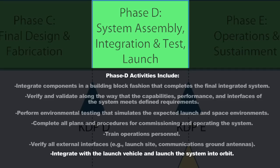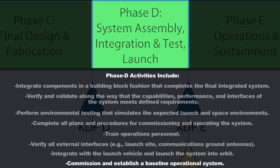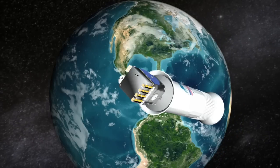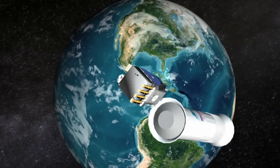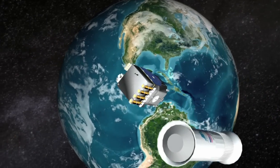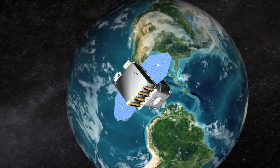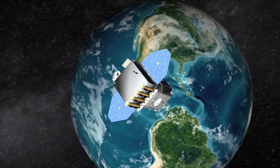You're going to integrate the system — in this case, a satellite — with the launch vehicle, and go ahead and launch it into orbit during the end of Phase D. The end of Phase D is really the commissioning and establishing of a baseline operational system where you've verified on orbit that the system meets all high-level requirements and can meet the stakeholder objectives.